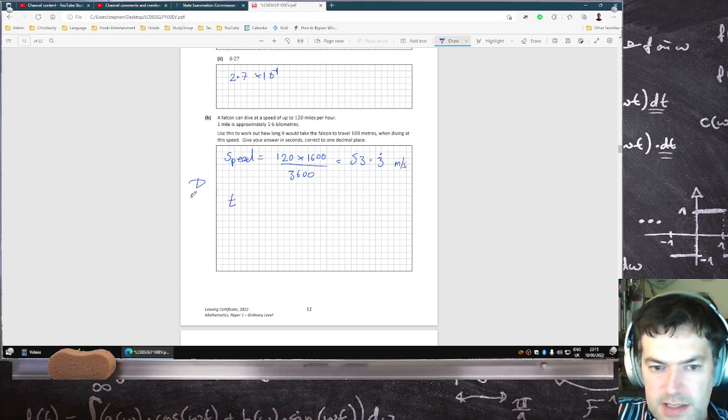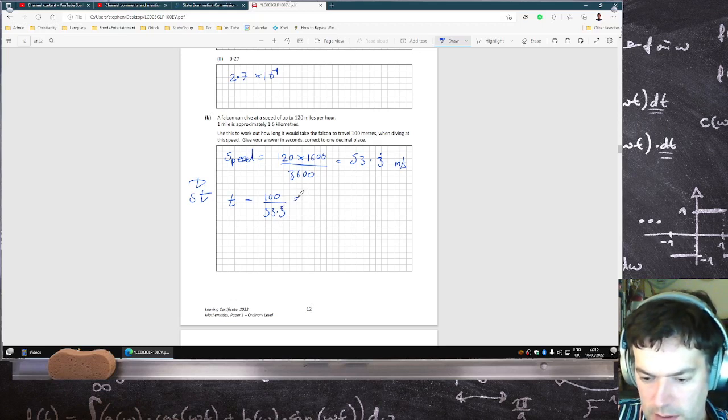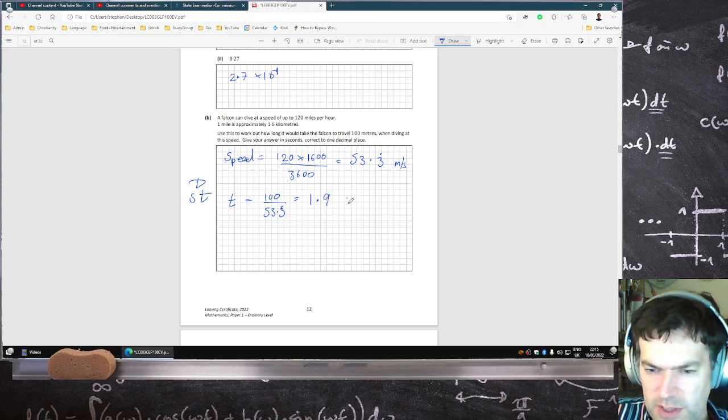Time, so using distance, speed, time, time is distance over speed. One decimal place? Okay, 1.9 seconds.